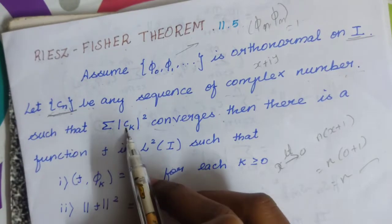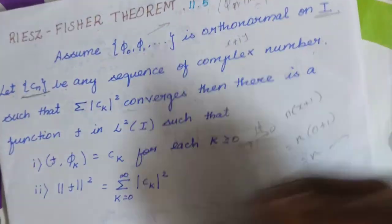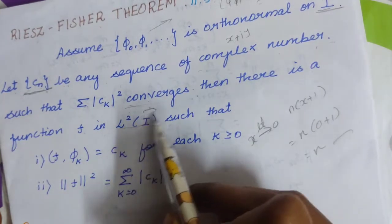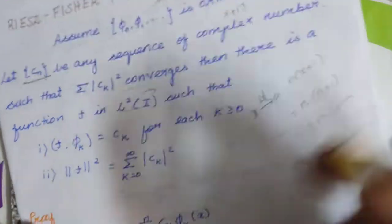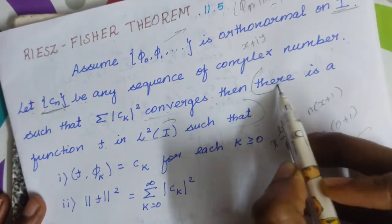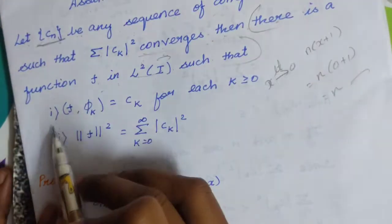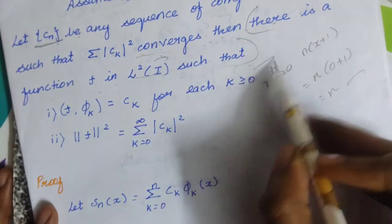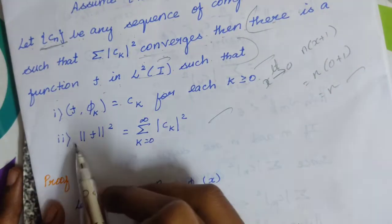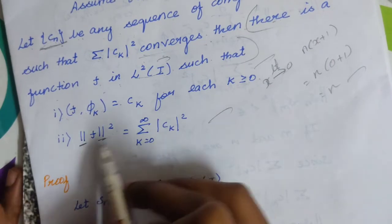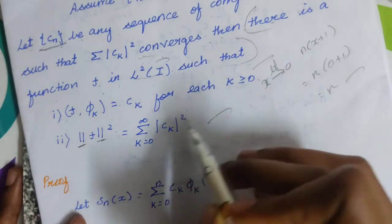Given that summation of |cₖ|² converges, there exists a function f in L²(I). We will prove two conditions: first, that ⟨f, φₖ⟩ equals cₖ for k greater than or equal to 0; and second, that the norm of f squared equals the summation from k equal to 0 to infinity of |cₖ|². Let's prove these two conditions.